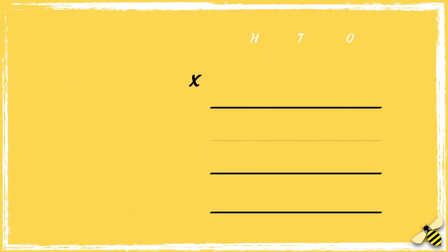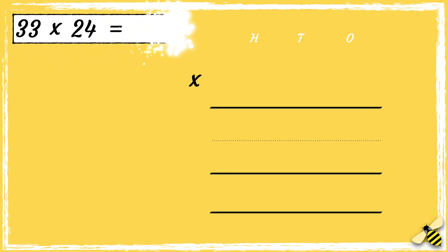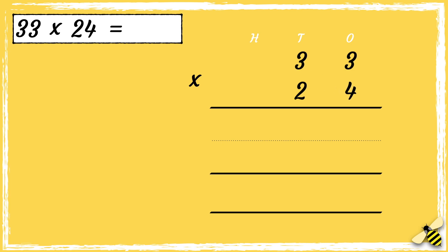Let's have a look at another one: 33 multiplied by 24. 33 has three tens and three ones; 24 has two tens and four ones. Now that we're set up, we're ready to multiply.